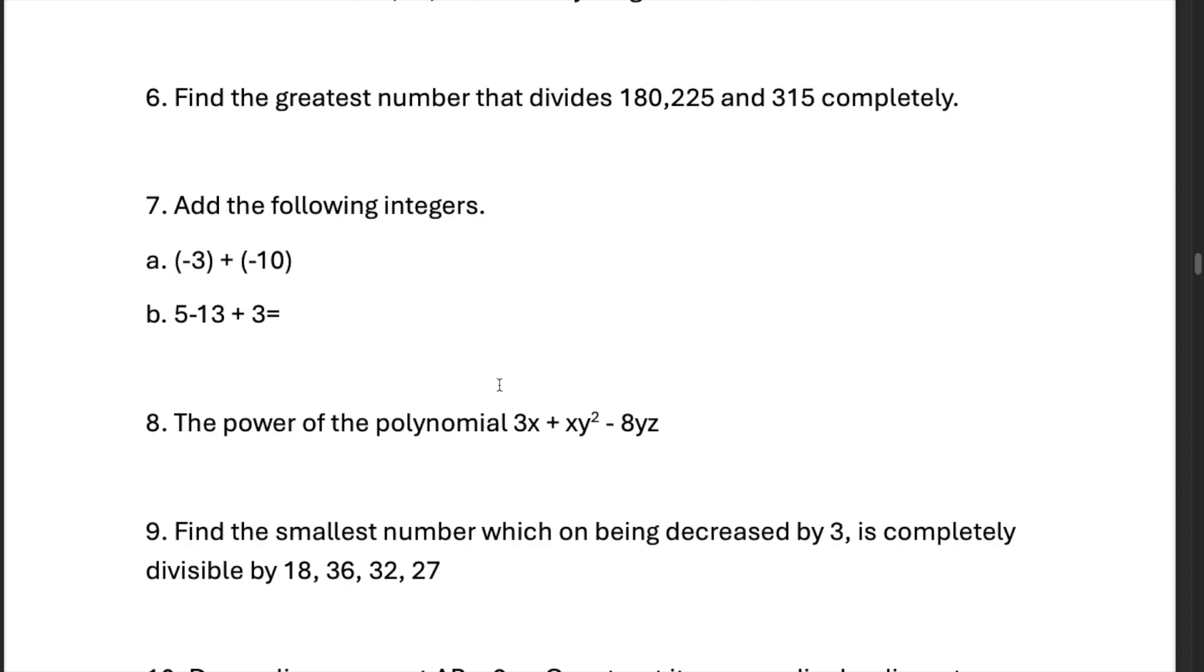5 minus 13 plus 3. The pluses are 5 and 3, so you add them up. It becomes 8 minus 13, give you minus 5.